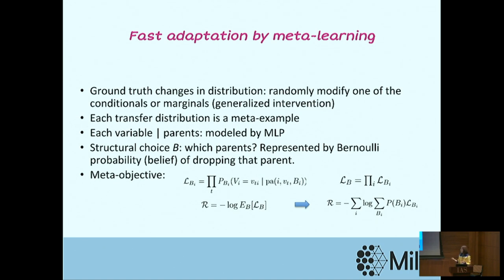To bypass the exponential search, we use a technique from deep learning: dropout. We disentangle the parameters of the causal graph into two sets: structural parameters — a Bernoulli distribution that learns whether variable A is a parent of variable B — and functional parameters that model how A affects B given that it is a parent. The meta-objective is a pseudo-likelihood of all these smaller models ensembled together.